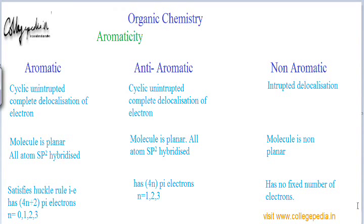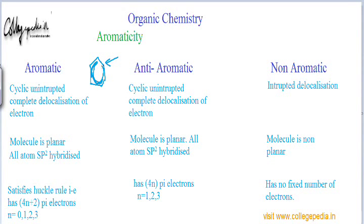After having been cyclic, the molecule must have cyclic, uninterrupted, complete delocalization of electrons. Suppose I have a cyclic compound and resonance is happening in only a certain region — that is not cyclic uninterrupted delocalization, because across that carbon the resonance has interrupted. That is not complete delocalization in the cyclic molecule, and in this case the molecule is not aromatic.